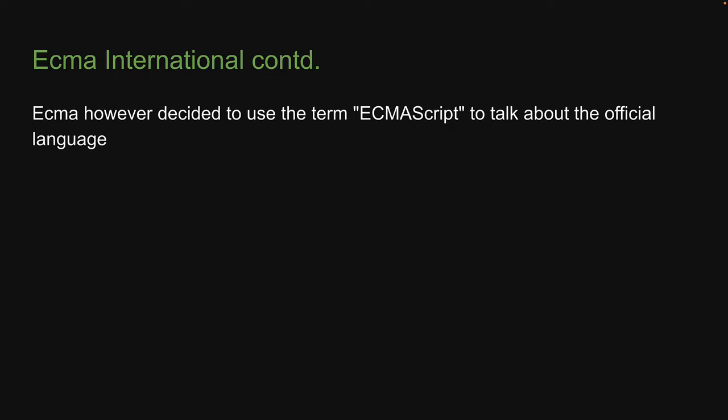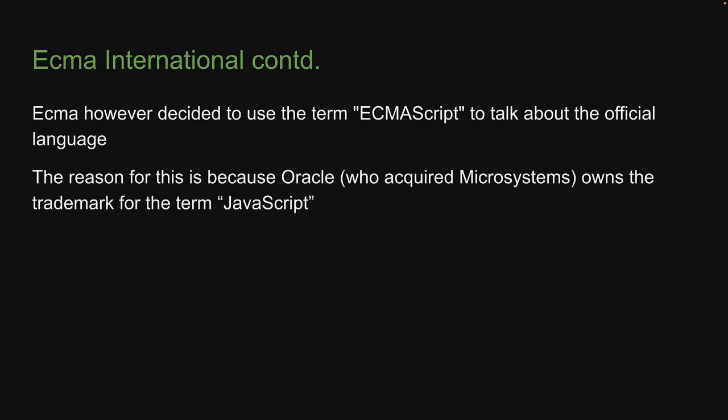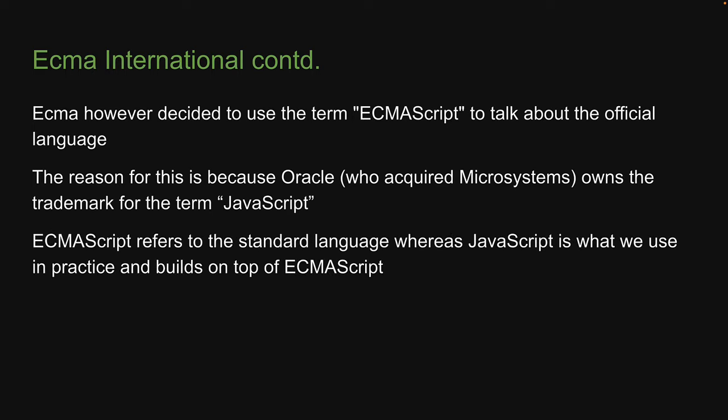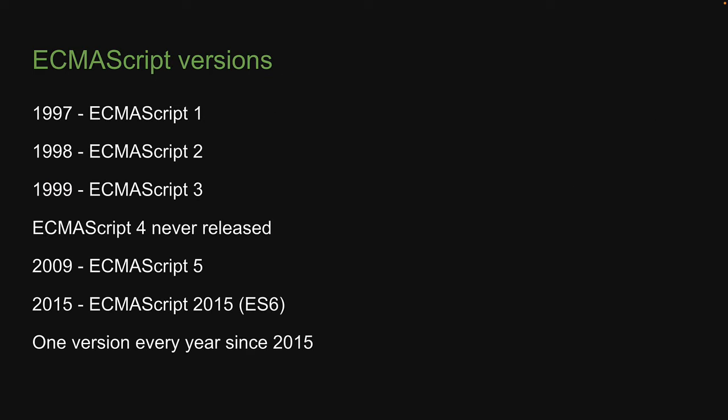ECMA decided to use the term ECMAScript to refer to the official language. The reason is that Oracle, who acquired Sun Microsystems, owns the trademark for the term JavaScript. So ECMAScript refers to the standard language, whereas JavaScript is what we use in practice and builds on top of ECMAScript. Over the years, many versions of ECMAScript have been released. ES2015, also known as ES6, is the version that provides what we call modern JavaScript features and has become a prerequisite for developing with JavaScript.